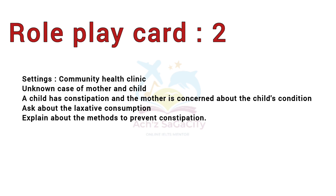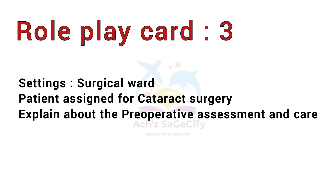The second speaking card was set in a community health clinic — an unknown case of a mother and child. The child has constipation and the mother is very concerned. We need to ask about whether they consumed any laxatives or about treatment already done, and explain methods to prevent constipation further. The third card was set in a surgical ward for a patient assigned for cataract surgery, requiring explanation of pre-operative procedures and care.